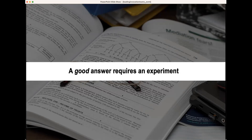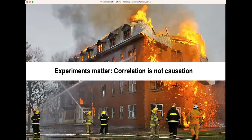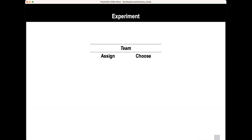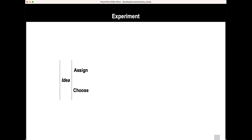A good answer to this question requires an experiment — experiments matter because correlation is not causation. If you observed firemen, you might wrongly assume that firemen cause fires, when in reality they go to where the fires are. The experiment we ran is a simple one: we let some people choose the team members they're going to work with, while others get randomly assigned. We let some people choose the entrepreneurial idea they're going to work on during a lean startup inspired class, and others get assigned to a particular idea of similar quality.